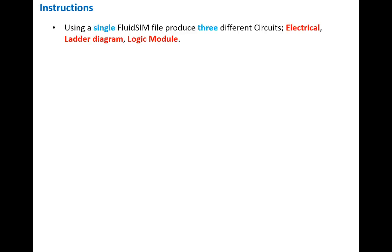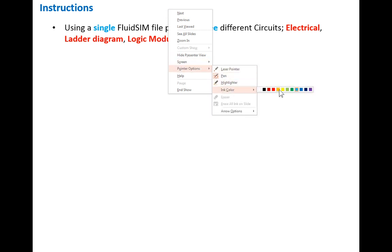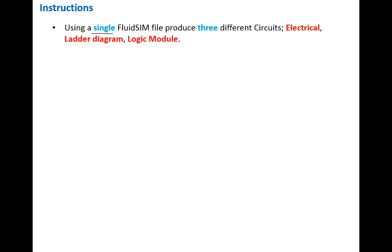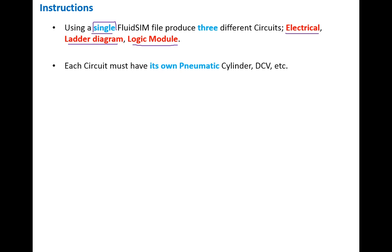Now for the lab task instructions: using a single FluidSim file, three circuits are going to be constructed — electrical, ladder diagram, and logic module — all in one file. Each of these circuits needs its own pneumatic part, so we end up with three pneumatic circuits, three cylinders, three DCVs, and three one-way flow control valves.